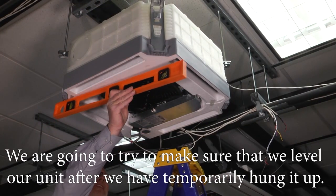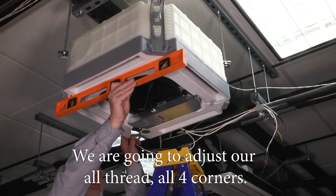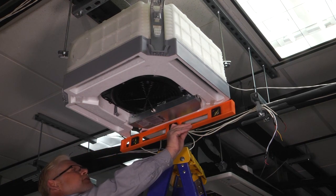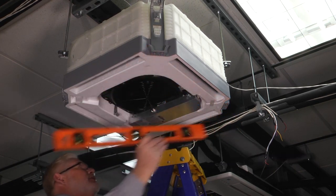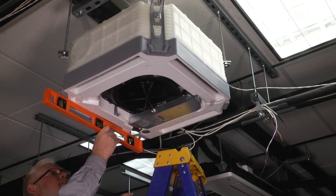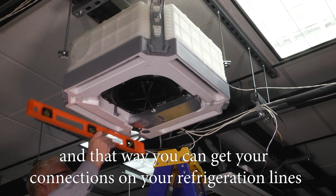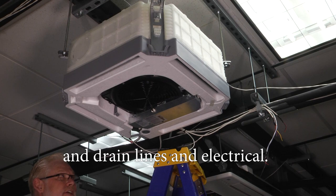We're going to make sure we level our unit after we temporarily hung it up. We're going to adjust our all thread on all four corners. We'll check it front and back on both sides. Make sure you check it from left to right on both sides and verify that it is level before you proceed, and then you can get your connections on your refrigeration lines and drain lines and electrical.